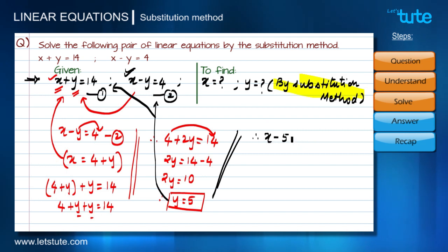This becomes x-5=4. I'll transfer this -5 to the right-hand side so that I'll get x=4+5.